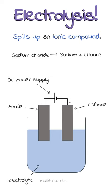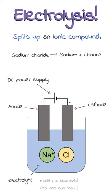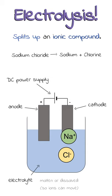It needs to be either molten or dissolved so that the ions are free to move. When we pass electricity through the electrolyte it splits up into positive and negative ions. The positive ions are attracted to the negative electrode and the negative ions are attracted to the positive electrode. When they get there they'll gain or lose electrons to turn back into neutral atoms, and the products are formed.